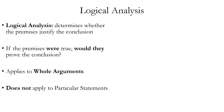Logical analysis looks at the logical connection between premises and conclusion. It asks the question: if the premises were true, would they prove the conclusion? The definition of the term valid in logic is that if the premises of a valid argument are true, then the conclusion must be true. There's also the concept of logical strength, which is that if the premises are true, then the conclusion is probably true based on those premises. So these are two types of logical analysis: looking for whether the argument is valid or looking for whether it is strong.